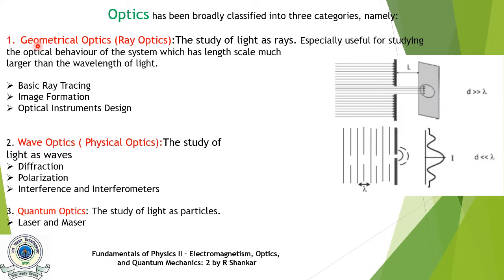Under Geometrical Optics, we study phenomena like basic ray tracing, image formation, and optical instrument design. Wave Optics is the study of light as waves; under this category we study phenomena like diffraction, polarization, interference, and interferometers. Quantum Optics is the study of light as particles, and lasers and masers are applications of quantum optics.